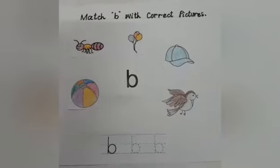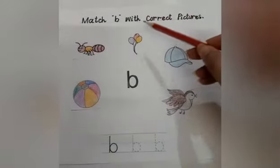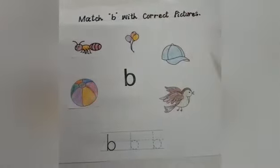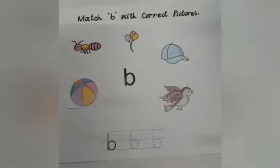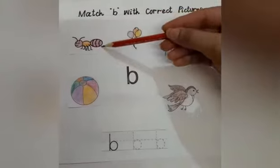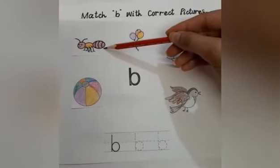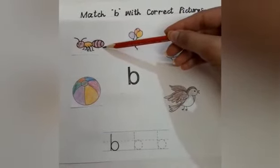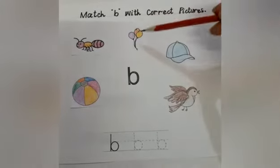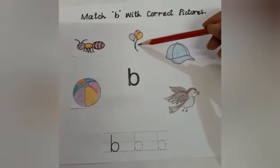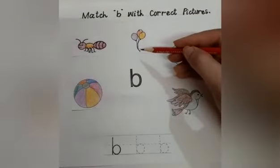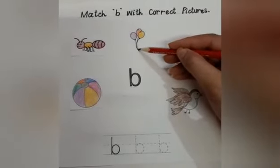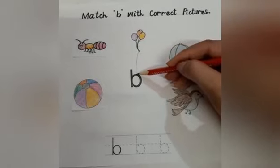Playgroup, now it's activity time. Match B with correct pictures. You will match the pictures with B. It's ant. It's ant. Balloon, it starts with B. Balloons start with letter B. Yes, very good. We will match the balloons with letter B.